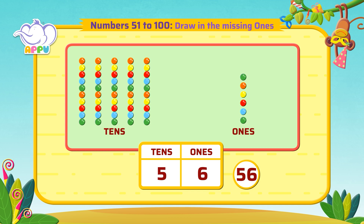Now we have 5 tens and 6 ones, which make 56. I'm happy to see you working like that.